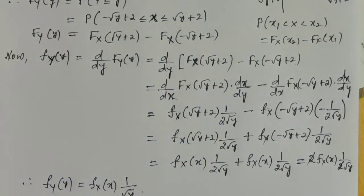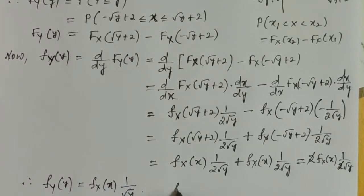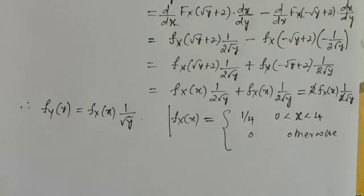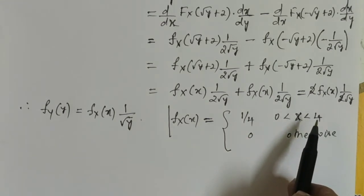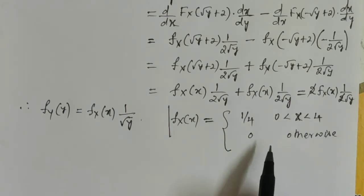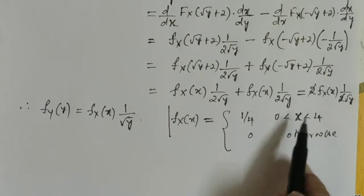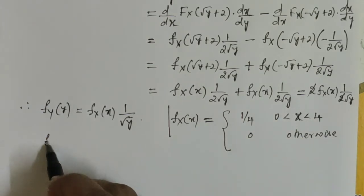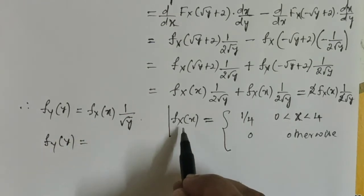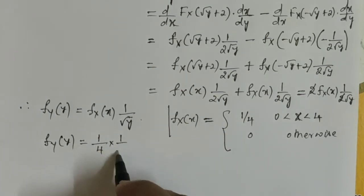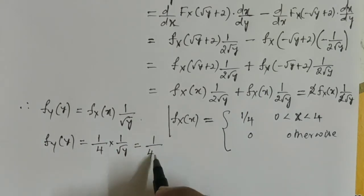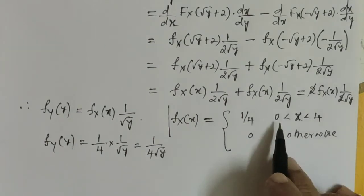Since X is a random variable which follows the uniform distribution, f_X(x) = 1/4 between 0 to 4, and 0 otherwise, because X follows the uniform distribution in the interval 0 to 4. Therefore, f_Y(y) = (1/4)·(1/(2√y))·2 = 1/(4√y), whenever the random variable X lies between 0 and 4.